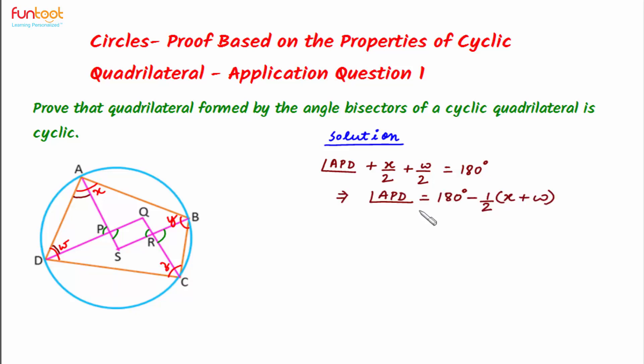So this implies angle APD will be equal to 180 degrees minus (X plus W) by 2. Similarly, we will apply the angle sum property in triangle BRC.